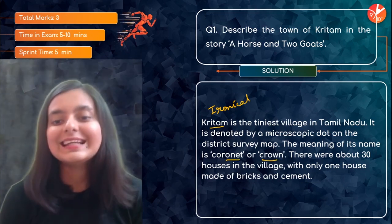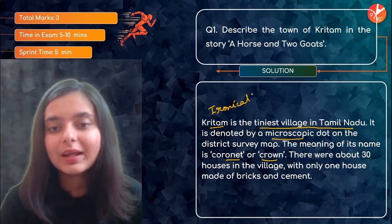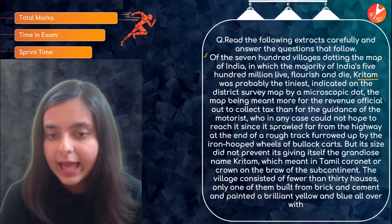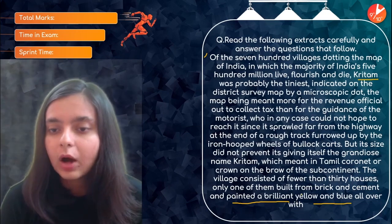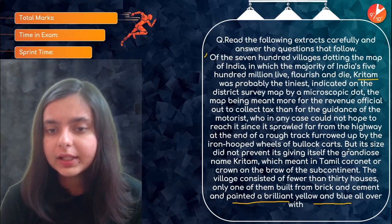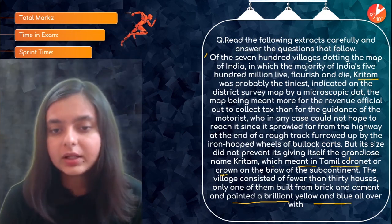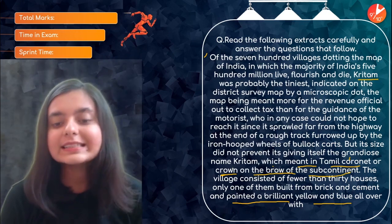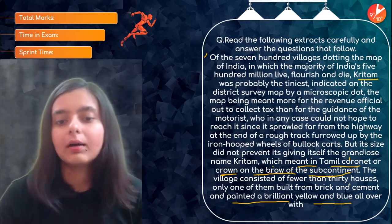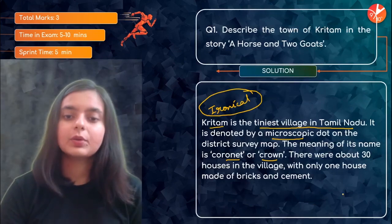Krittam is the tiniest village in Tamil Nadu, denoted by a microscopic dot on the district survey map. That makes the name very ironical. There are about 30 houses in the village, with one house made of brick and cement, painted a brilliant yellow and blue. The name in Tamil means 'a crown on the brow of the subcontinent,' yet in reality it is just a microscopic dot — so the grandness of the name clashes with the reality of the village.